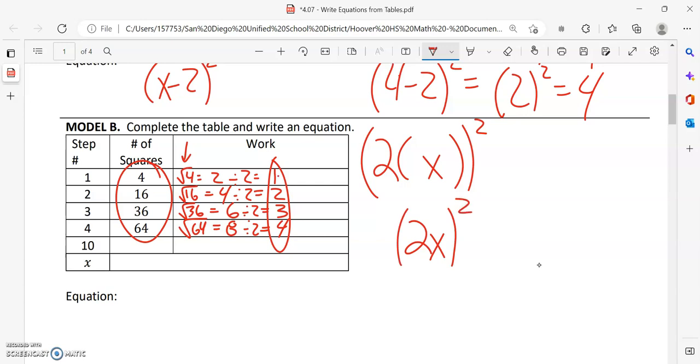So let's test it again. So I put in one in here. So I get two times one squared, two times one is two, two squared is four.